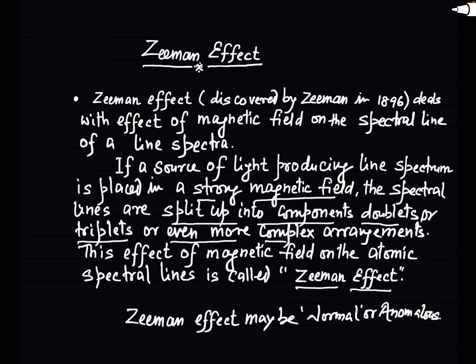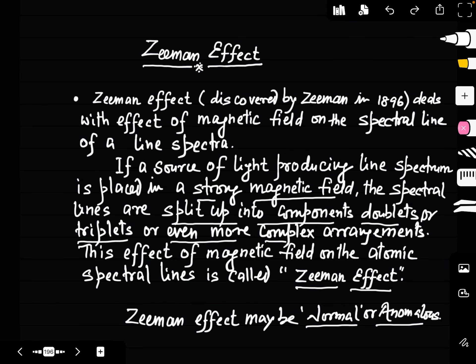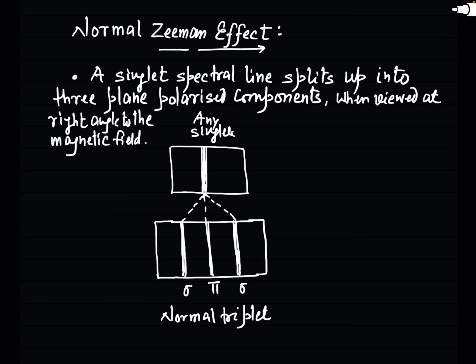In fact the Zeeman effect is of two types: one is called the normal Zeeman effect and the other is called the anomalous Zeeman effect. We will now see what the normal Zeeman effect is and then what the anomalous Zeeman effect is. Today in this class we will only talk about the experimental observation; the explanation of these phenomena will be discussed in forthcoming lectures using the quantum mechanical approach.